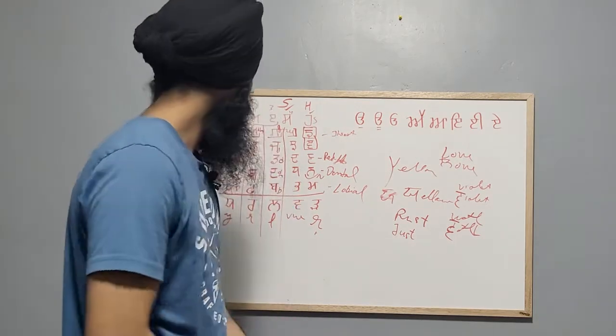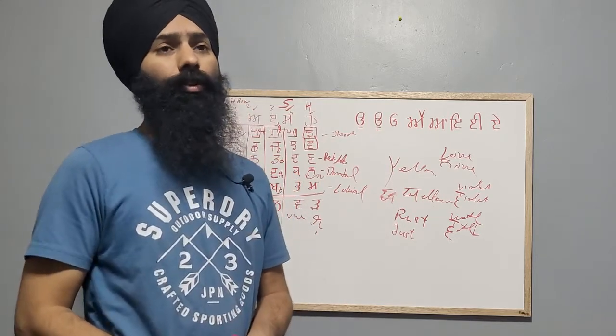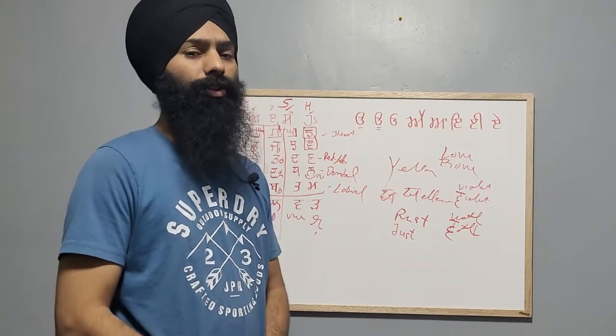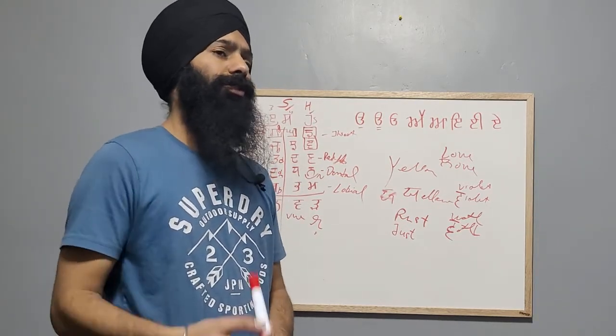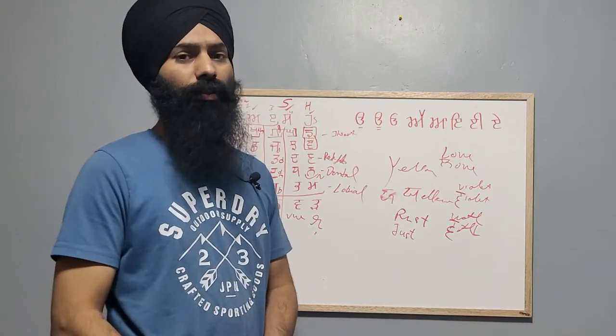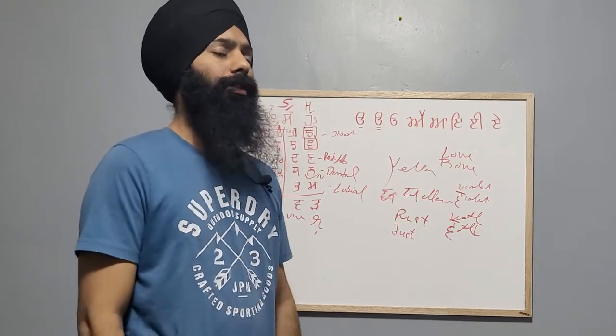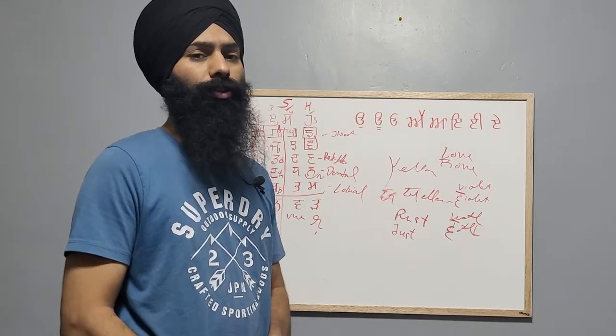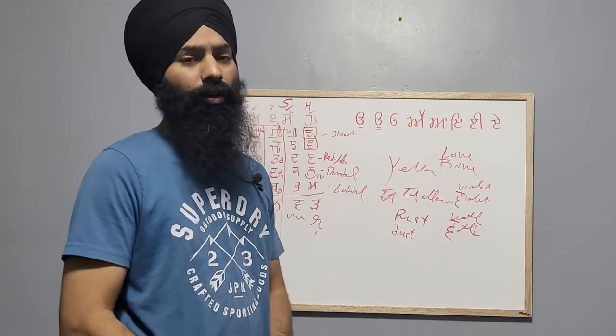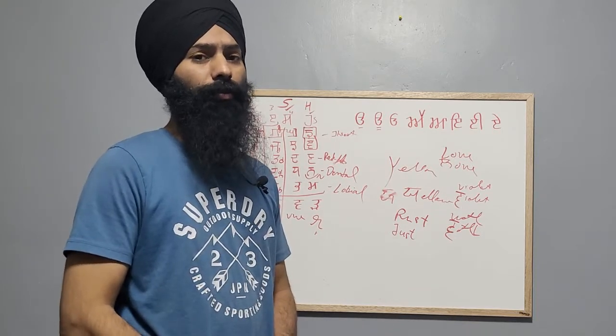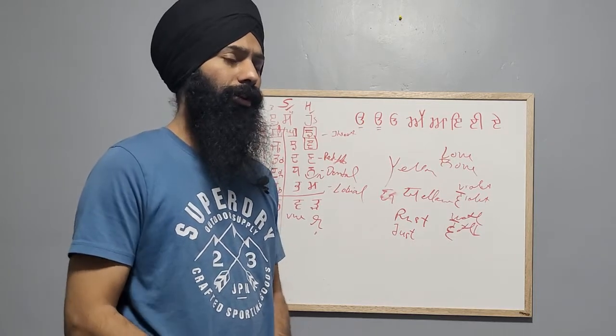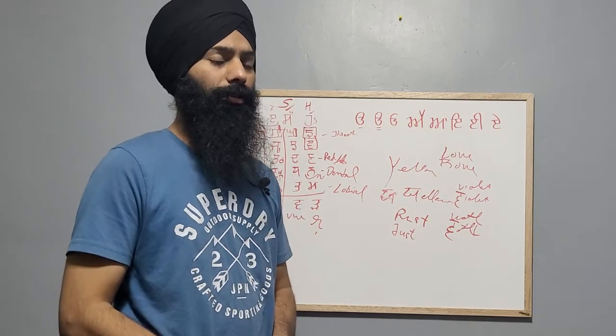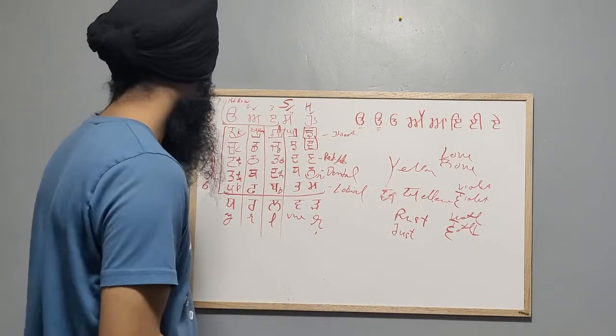Okay, so these are just the normal alphabets. After that, there are some additional alphabets which were not part of the original language but were brought in to translate Persian text, because back then Persian was the official language of Punjab. Some words were modified to make these sounds.